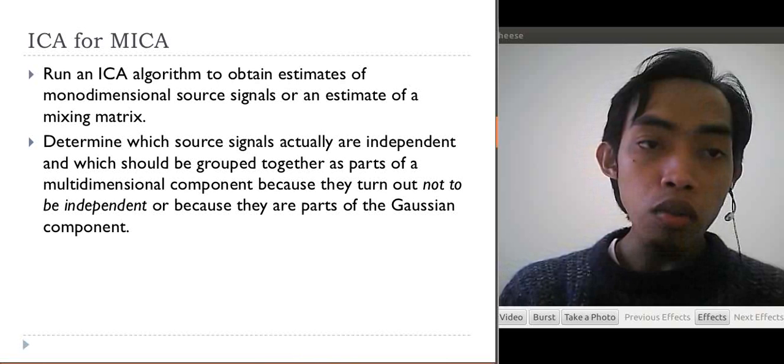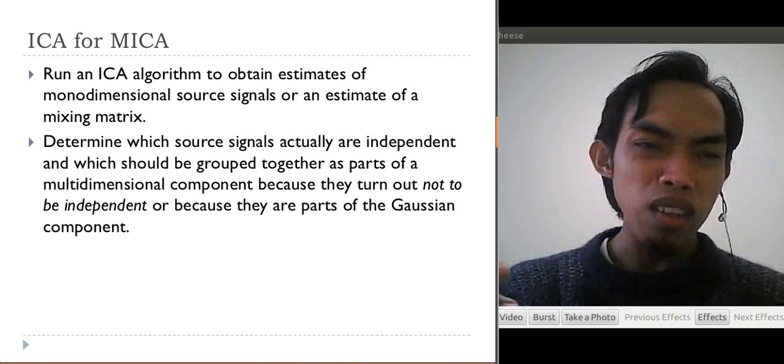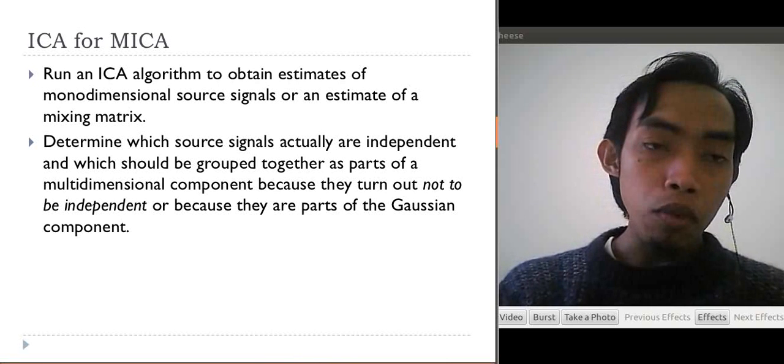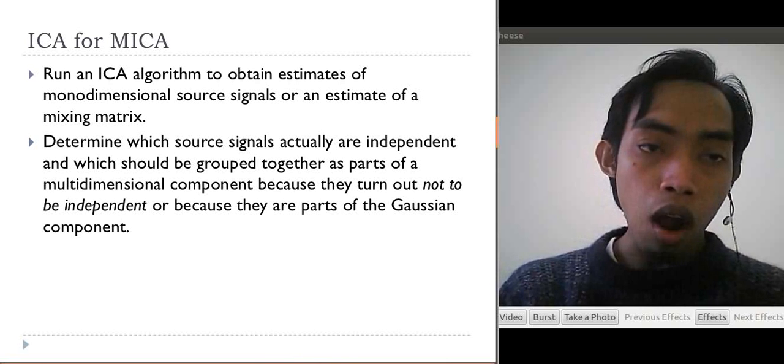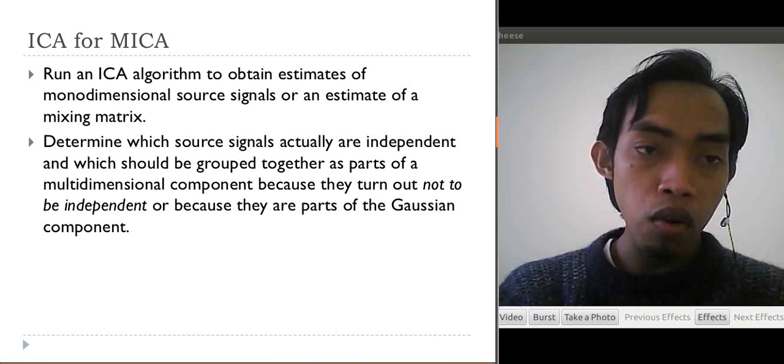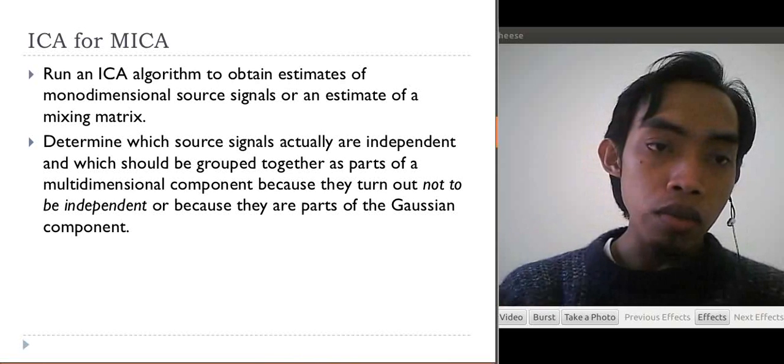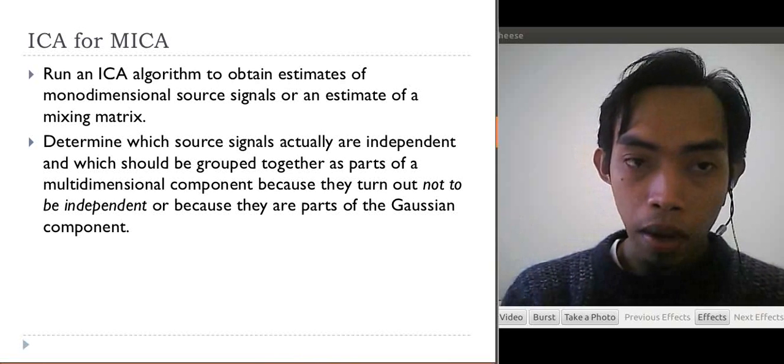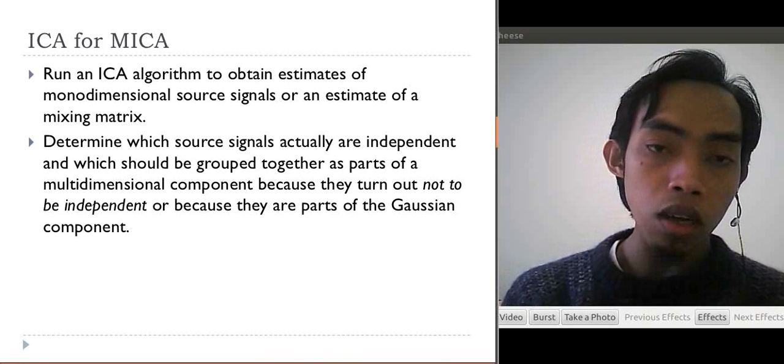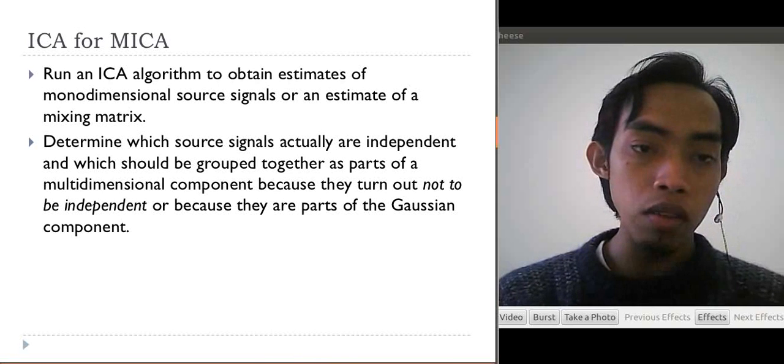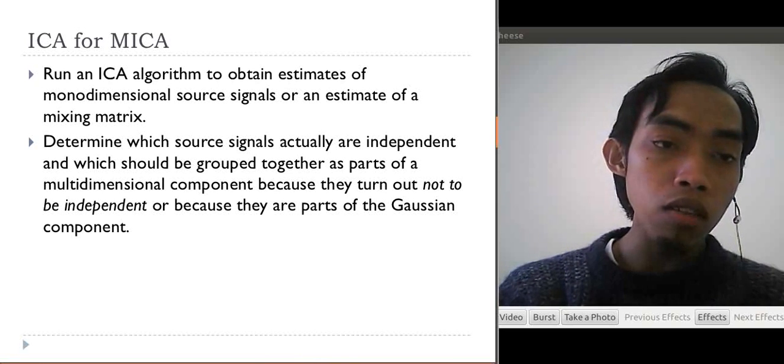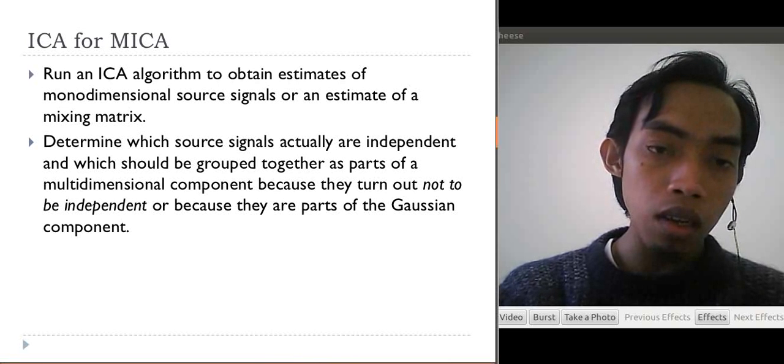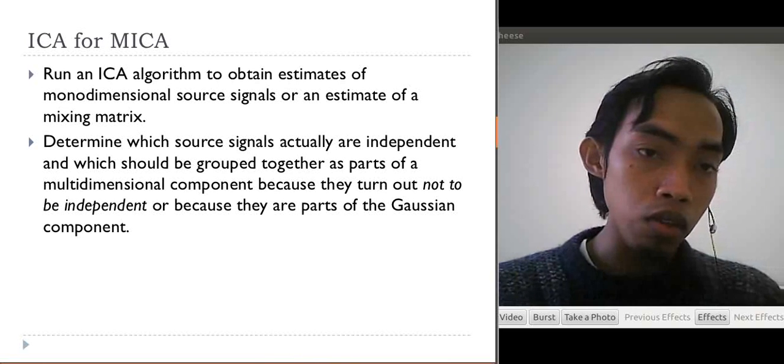How to obtain MICA from ICA, or how to generalize ICA for multidimensional ICA? There are two steps. The first one is to run an ICA algorithm to obtain estimates of monodimensional source signals or an estimate of mixing matrix. The first step is to obtain mixing matrix or source signals, which is different from the usual ICA.